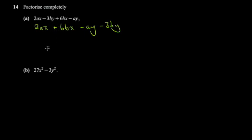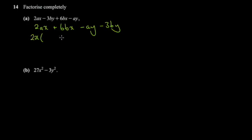Essentially, when you have four terms, you're dealing with a case where you have to match the brackets. The common factor here is 2x — for the numbers 4 and 6, the common factor is 2, and for the variables the common factor is x. So 2x into the first term gives you a, and 2x into the second term gives you 3b.